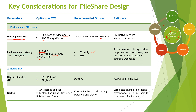The second pillar is Reliability. FSx comes in two versions — Multi-AZ and Single-AZ. Since we needed high availability and wanted to prevent failures in any AZ, we selected Multi-AZ, even though it costs almost twice as much as Single-AZ. For backups, most enterprises use standard AWS Backup with rules configured for daily, monthly, and weekly schedules. However, since we had about 100 TB of data, that would have been very expensive, so we built a custom solution using Lambda, DataSync, and Glacier to reduce the overall backup cost.